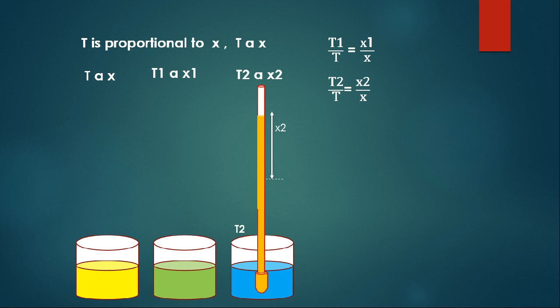Now I am subtracting the first equation from the second: T2 by T minus T1 by T equals X2 by X minus X1 by X. Simplifying: T2 minus T1 by T equals X2 minus X1 by X, therefore T equals (T2 minus T1) times X divided by (X2 minus X1).